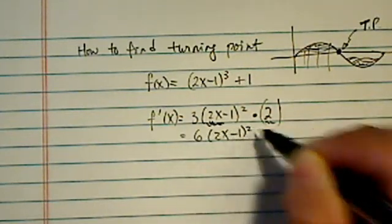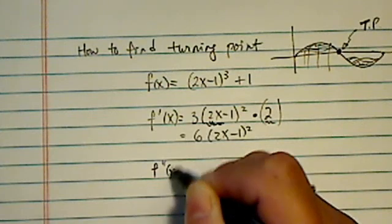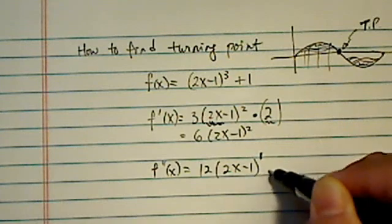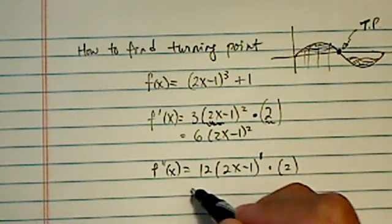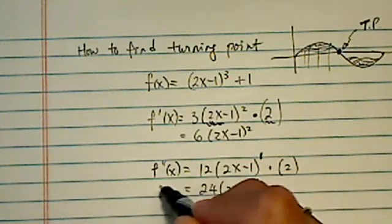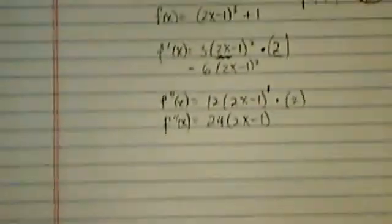Then, f double derivative is equal to 12(2x-1), and then this to the 1. Remember, times 2 again. Now, in our problem, this one actually doesn't make much difference. It's just the coefficient in the front.